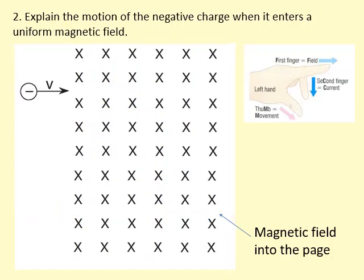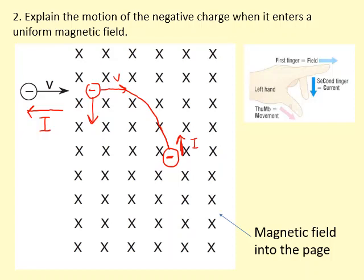Now we have a negative charge moving towards the right. The problem is that current is defined as a flow of positive charge, so the conventional current is actually towards the left — in the opposite direction to which the electron is moving. Applying Fleming's left hand rule with current towards the left and field into the page, the force on the particle is downwards. So it is going to curve downwards like this. Once it is over here, the current is going in the opposite direction to the velocity of the electron.